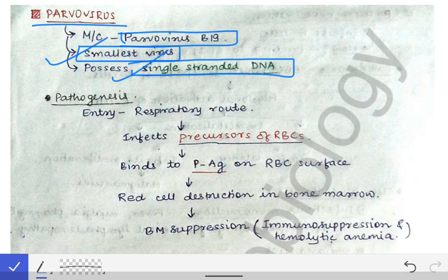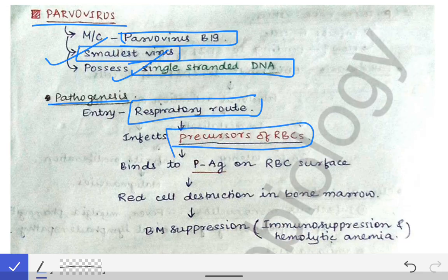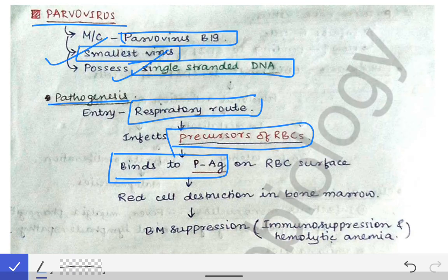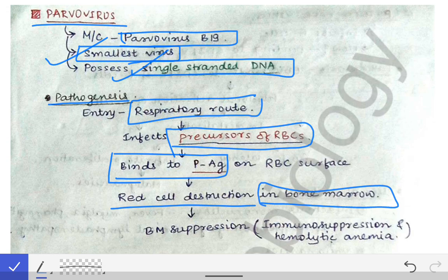Now we will see how parvovirus causes infection by understanding its pathogenesis. The first point is entry — the most common route is the respiratory route. Through the respiratory route, the virus enters the body and infects the precursors of the RBCs by binding to the P antigen on the RBC surface. When it binds to the P antigen on the precursors of the RBCs in the bone marrow, those precursors become infected.